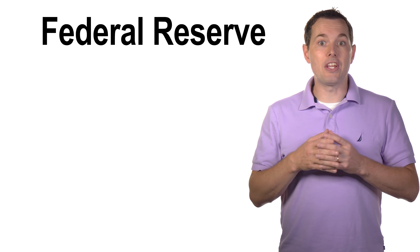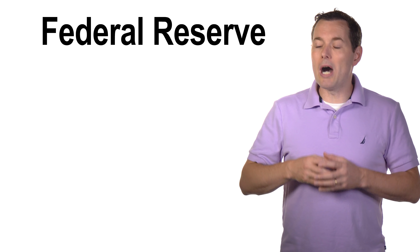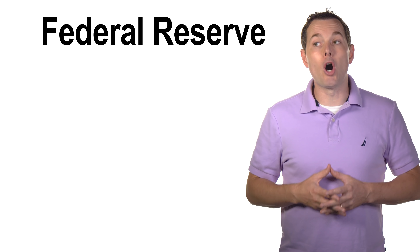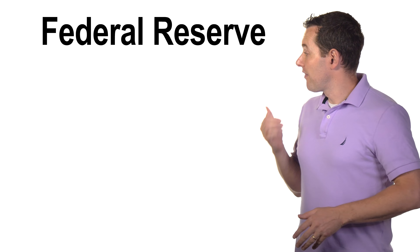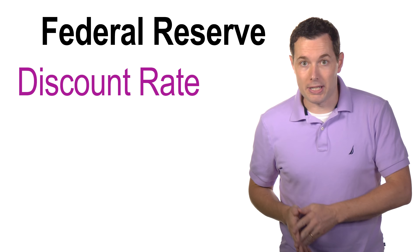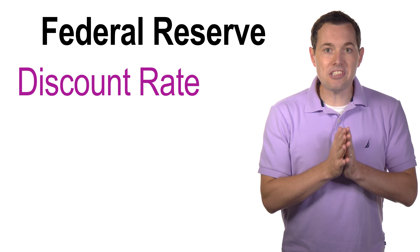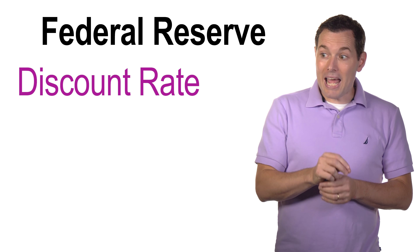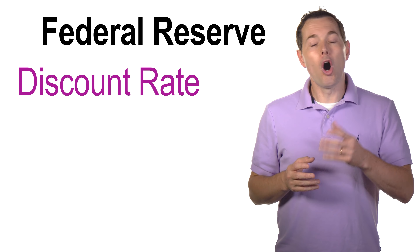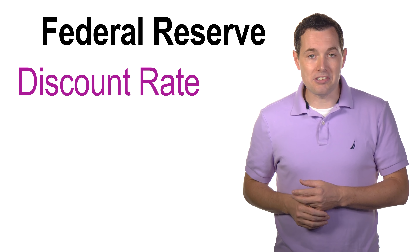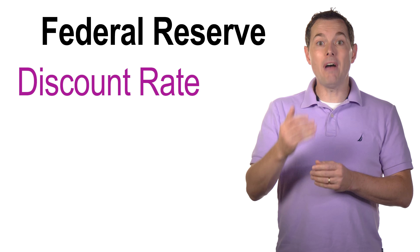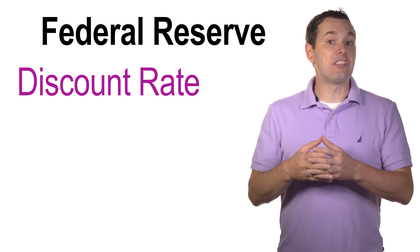The Fed has a few different tools they use to help the economy, and their goal is to try to keep the economy on the right track. First, they set the discount rate — also known as the Fed funds rate. Basically, this is the interest rate that commercial banks can borrow from each other on a short-term basis, usually overnight, or they can borrow from the Fed at the very same rate.